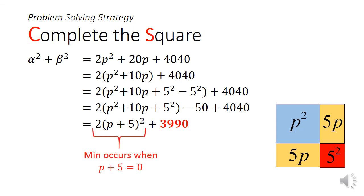Since the smallest square number is 0, the minimum will occur when p plus 5 equals to 0. This gives us a minimum value of 3990.